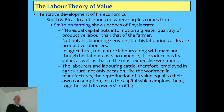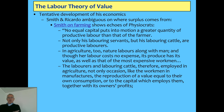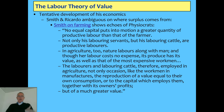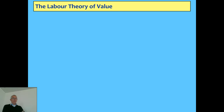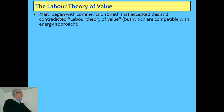Smith is making the same mistake the physiocrats did of not realizing that labor in manufacturing also exploits energy stored in coal and oil. He said that the labor and laboring cattle occasion, like the workmen in manufactures, the reproduction of a value equal to their own consumption together with the owner's profits. From a thermodynamical point of view, that's correct. But he's arguing agriculture does more — that's a hangover from the physiocrats limited to what was known about agriculture in France at the time. When Marx started reading this stuff, these are his handwritten notes published as the Economic and Philosophical Manuscripts of 1844.